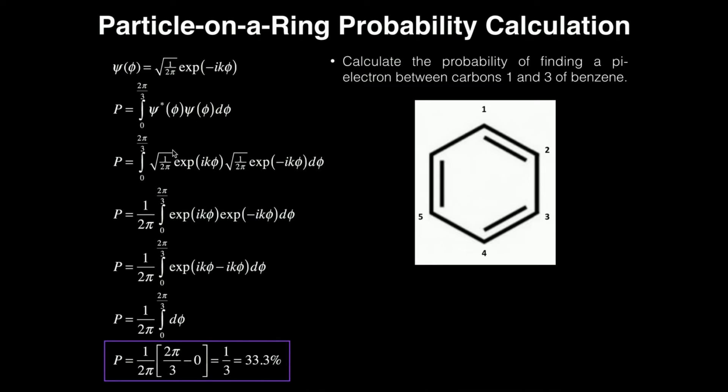So my first psi, the psi star, will be square root of one over two pi times e to the positive ik phi. And then I'm just going to throw in the other wave function, square root of one over two pi times e to the negative ik phi integrated over d phi from zero to two pi over three.